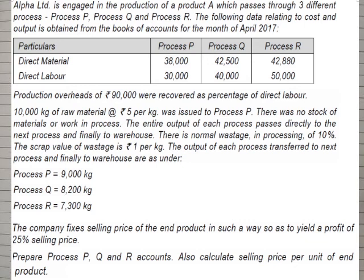There is a normal wastage of 10%. The scrap value of wastage is 1 rupee per kg. The output transferred to the next process is given. The company fixes the selling price of the end product so as to yield a profit of 25% of the selling price. We have to prepare process P, Q and R accounts and also calculate the selling price per unit of the end product.